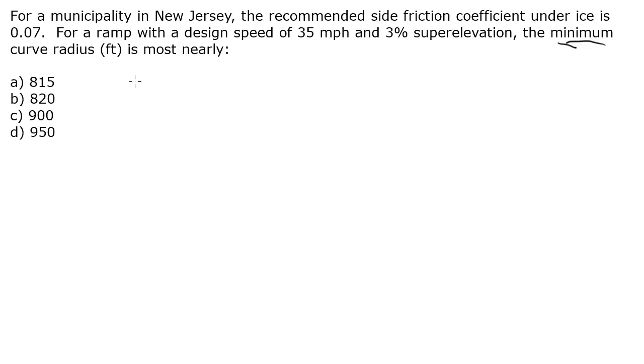I'm going to look at the superelevation formula from chapter 78, equation 78.37B, since we want to use US units. That states that superelevation, E, is equal to velocity squared in miles per hour divided by 15 times R.